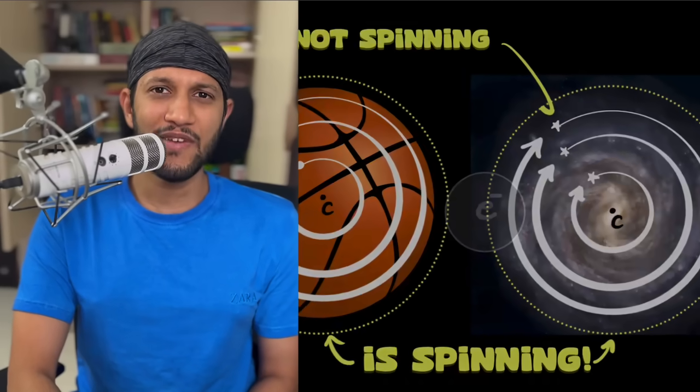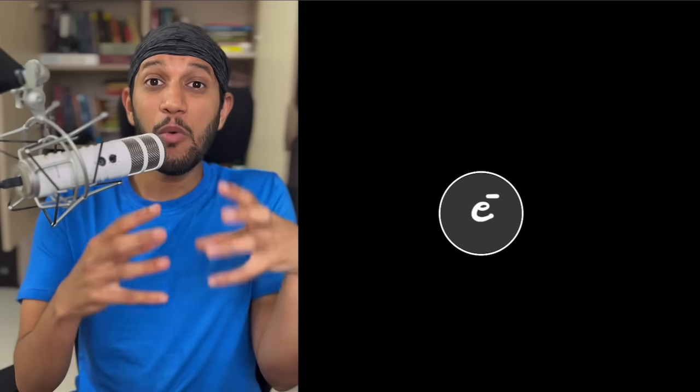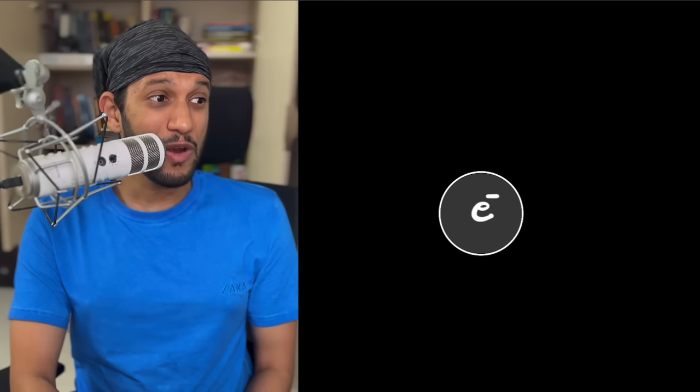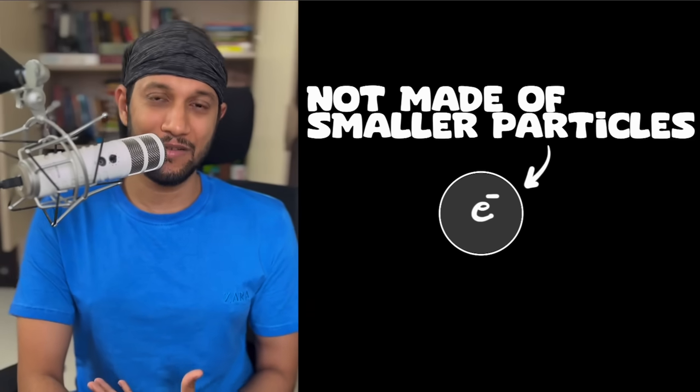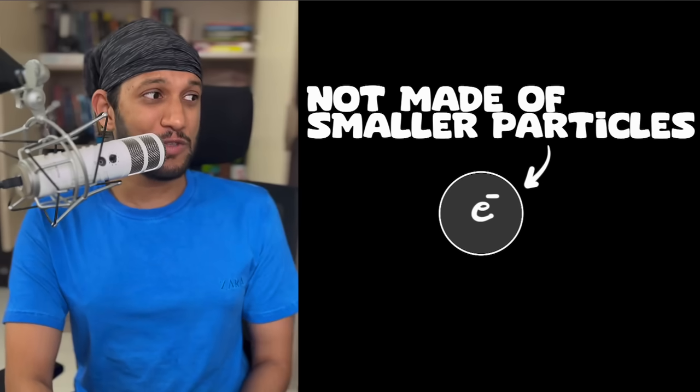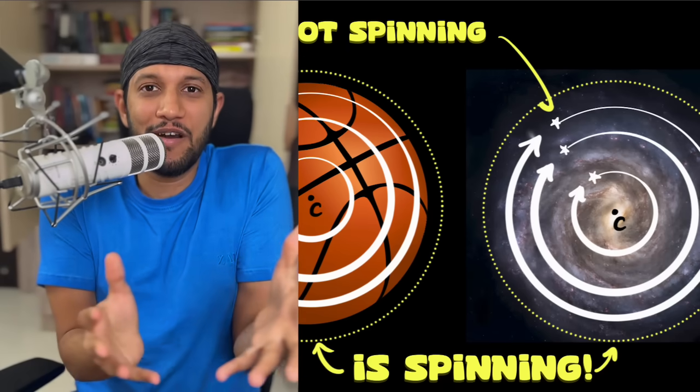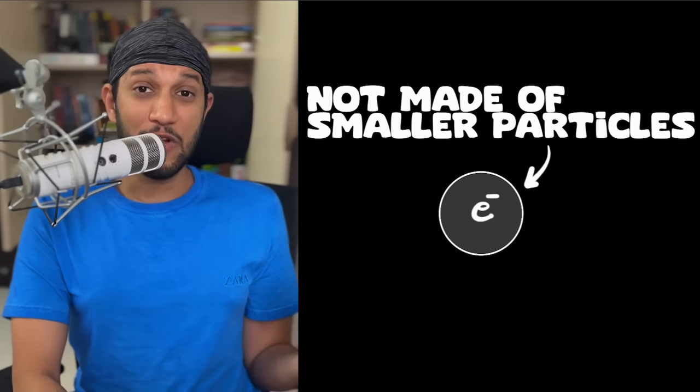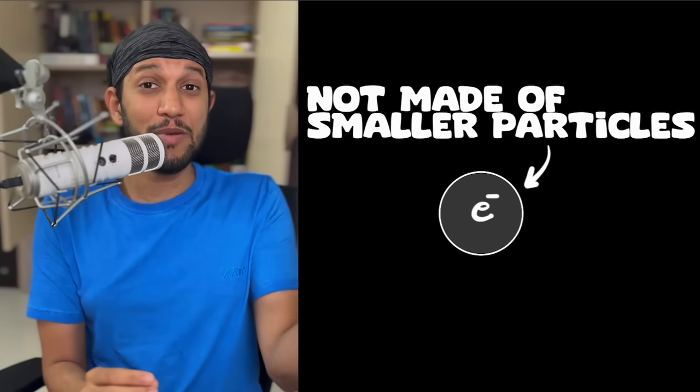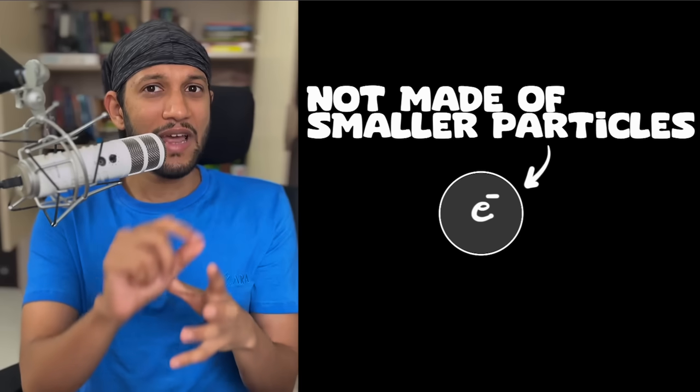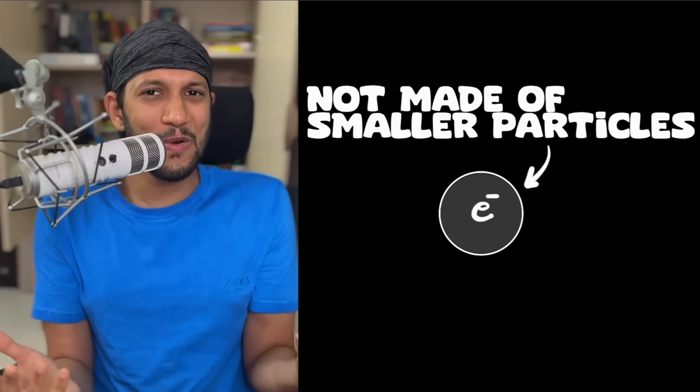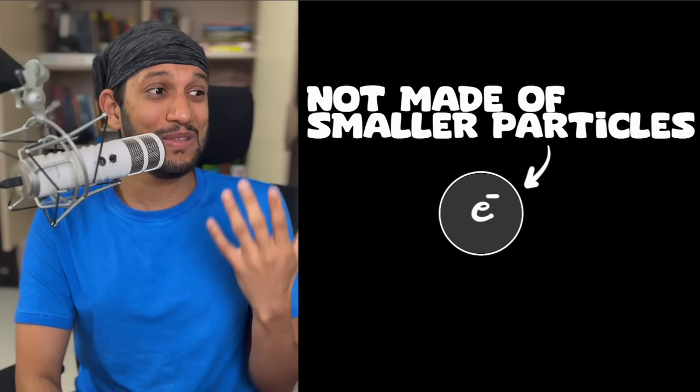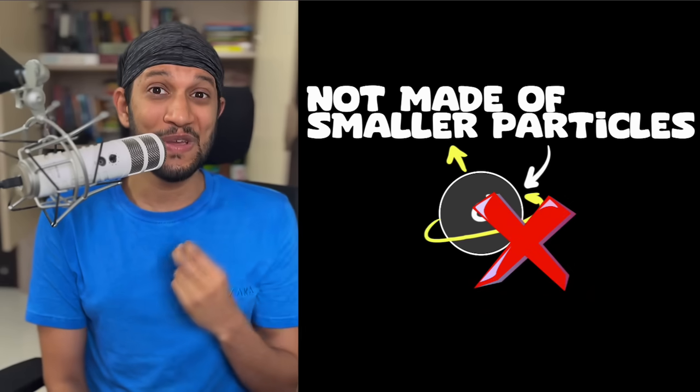Now let's come to electrons. Feynman, why do you say electron can never spin? Well, because Feynman says, electrons are truly the most fundamental particles of this universe. As far as we know, they are not made up of any smaller particles. And we just saw, if you want something to spin, that needs to have a group of particles, and each of them need to go in a circular path. It is impossible for an electron to spin, Feynman says.